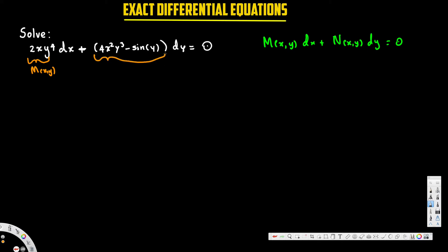The next step is to take the partial derivative of M with respect to y, and also the partial derivative of N with respect to x, and check whether these two are equal. If they are equal, the equation is exact; otherwise it is not an exact differential equation and we stop there.